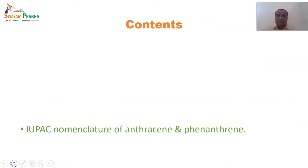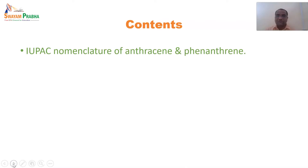Now let's see the contents of this session: IUPAC nomenclature of anthracene and phenanthrene. In the earlier session, we completed three examples from polynuclear aromatic hydrocarbons — naphthalene, diphenylmethane, and triphenylmethane. Now in this session, we will be going through anthracene and phenanthrene, which are the last two examples from polynuclear aromatic hydrocarbons as per the syllabus.